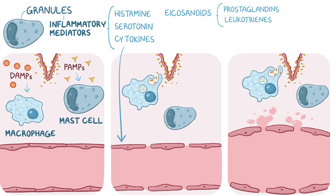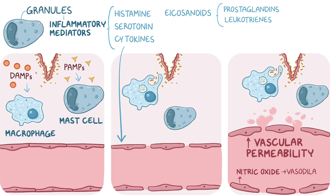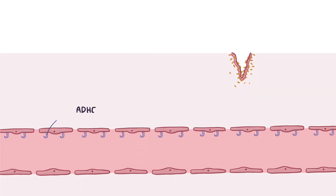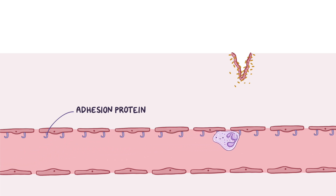The release of cytokines causes capillaries to get larger and increase vascular permeability, allowing plasma proteins and fluids to leave the circulation. Endothelial cells also help spur on this process by releasing nitric oxide, which helps vasodilate the capillaries and makes them more permeable. In addition, endothelial cells express more adhesion proteins to help leukocytes floating in the blood to attach and roll along the vessel wall until they reach the injured site. In particular, neutrophils get attracted to the site of infection by chemokines and microbial products.